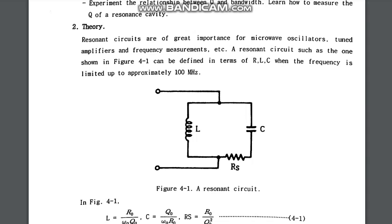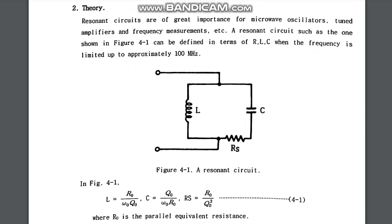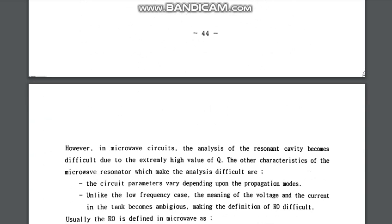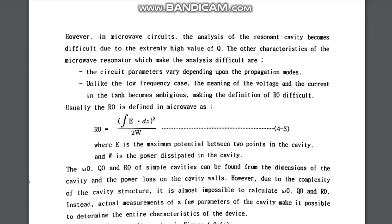Resonance circuits are of great importance for microwave oscillators, tuned amplifiers, and frequency measurements. Looking at a simple RLC circuit, in the resonance circuit you have to make XL equal to XC — that means the impedance of the inductance and the impedance of the capacitance should be equal at the resonance frequency.